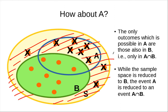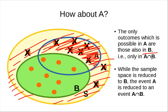What's set A in this case? Set A can be divided into two subsets: one part that cannot occur (the part outside B), and the other part that belongs to set B as well — and this is A intersection B. So when the sample space is reduced to B, A is also reduced to A intersection B.